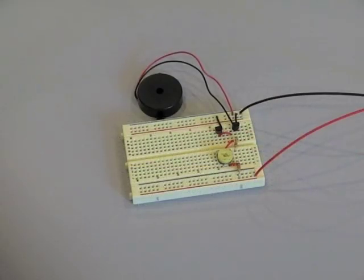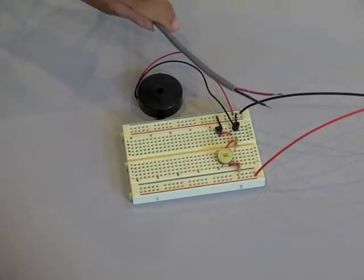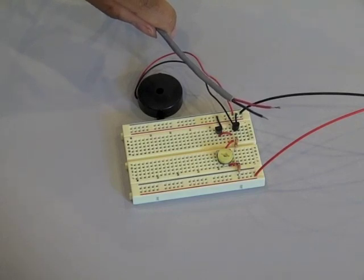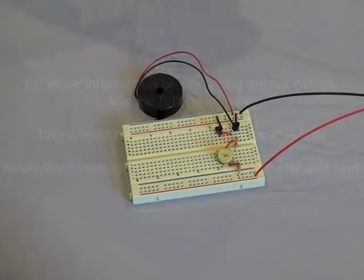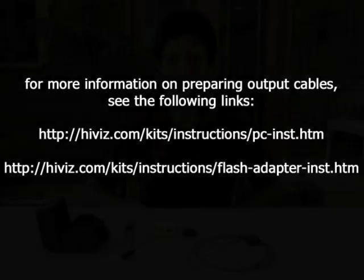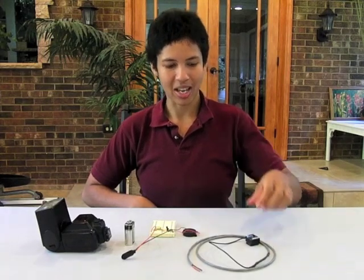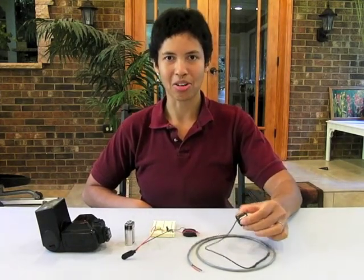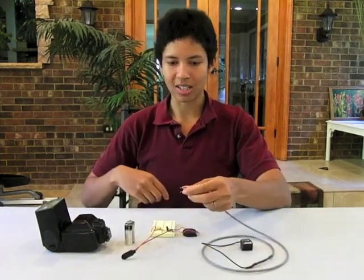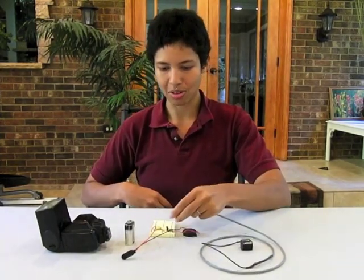Now it's time to connect our circuit to the flash unit. For that purpose we have this two conductor cable one end of which I trimmed back and the other end is to connect to a flash unit. Now we're ready to connect our flash unit to our circuit. For that purpose we have a flash foot adapter that's already been spliced to the two conductor output cable.